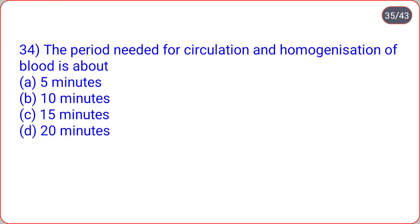The period needed for circulation and homogenization of blood is about? Options are 5 minutes, 10 minutes, 15 minutes, 20 minutes. Correct option is 15 minutes.